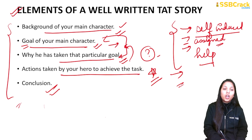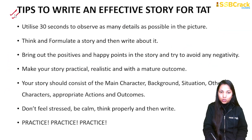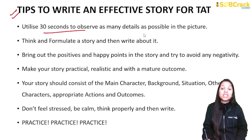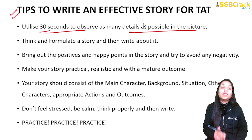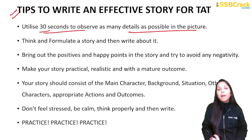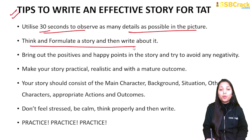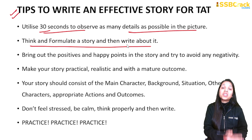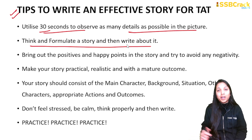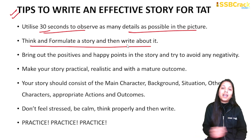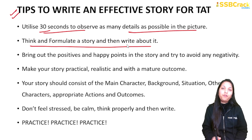Now we will go with the tips to write an effective TAT story. As already mentioned, utilize the 30 seconds to observe as many details as possible in the picture. Do not start writing the story during those 30 seconds, because after 30 seconds the picture vanishes and you cannot see it again. Think and formulate a story first, then write. You can utilize an extra 10–15 seconds to think before writing. With a properly formulated idea, you can easily complete the story within three to three and a half minutes.